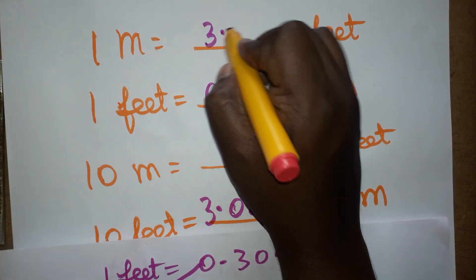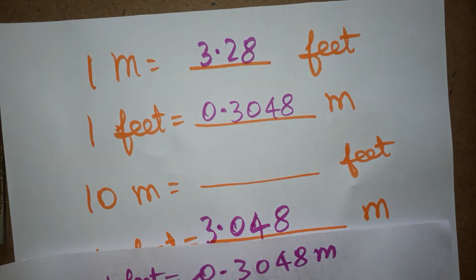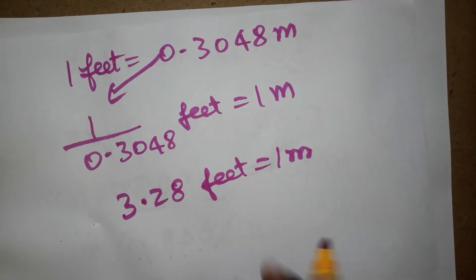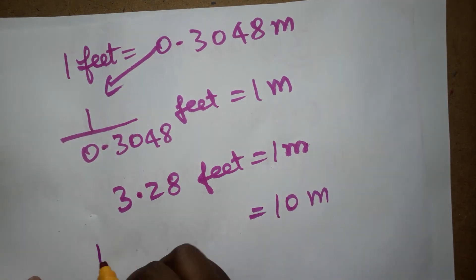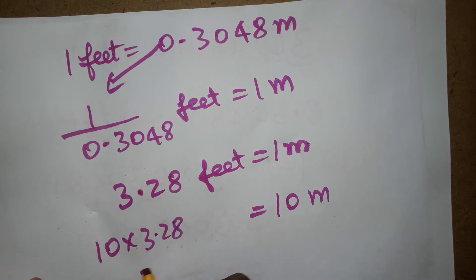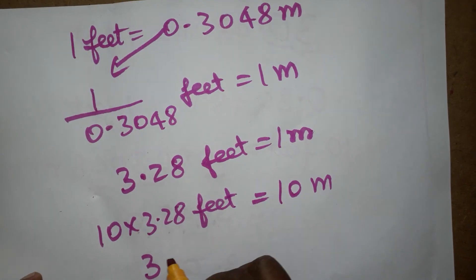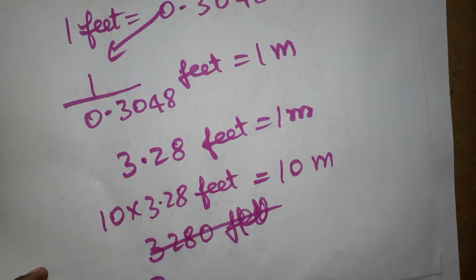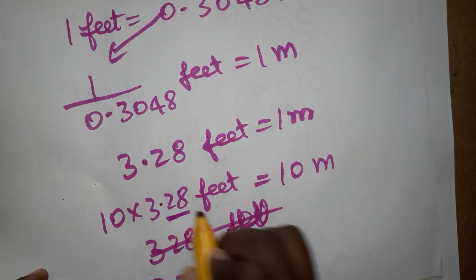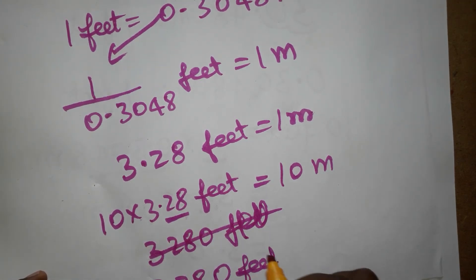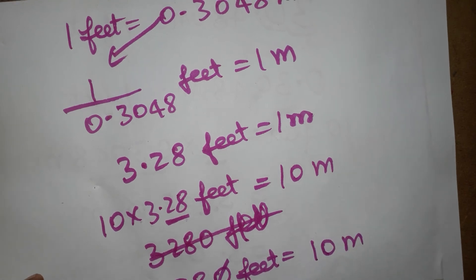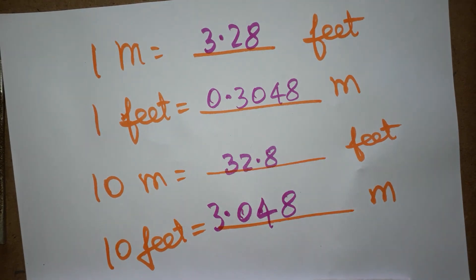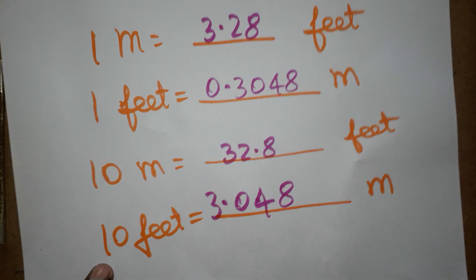The next question: 10 meters is equal to how many feet? We multiply both sides by 10: 10 × 3.28 = 32.80. Since the zero has no value, 10 meters equals 32.8 feet. Thank you for watching. If you like my channel, please subscribe — thank you everyone.